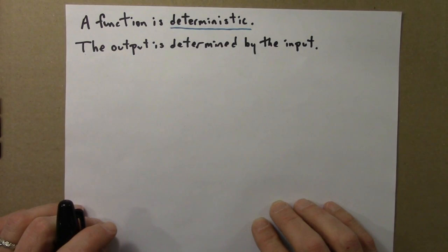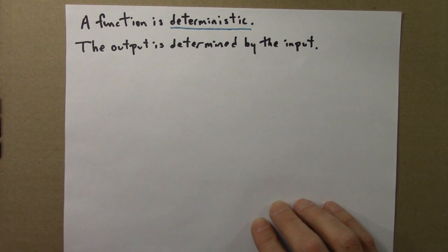In math, a function is deterministic. That means that the output is determined by the input. The output depends entirely on the input.